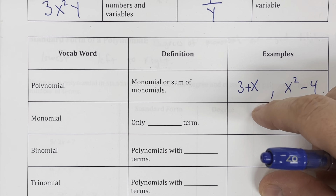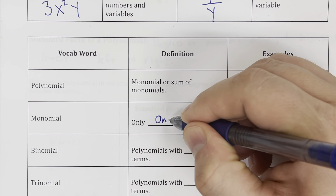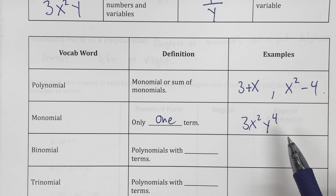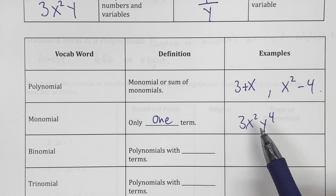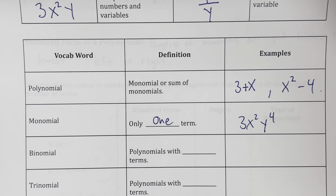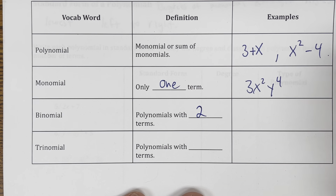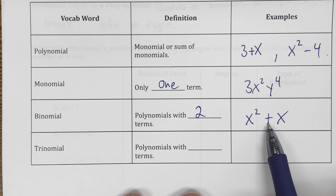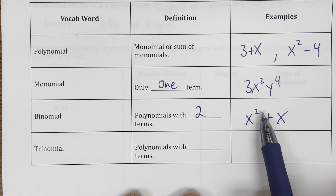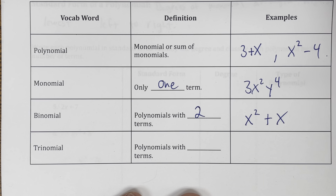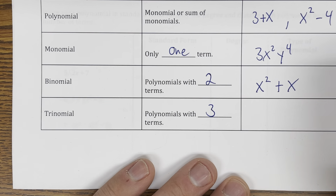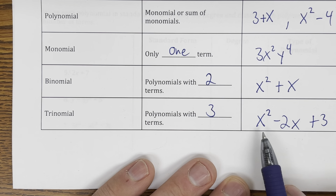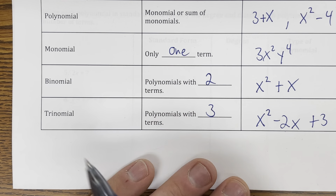A monomial has only one term — something like 3x squared y to the fourth — it's not separated by a plus or minus sign. A binomial is a polynomial with two terms, so something like x squared plus x, separated by a plus or minus sign. And a trinomial is a polynomial with three terms, so something like x squared minus 2x plus 3 — first term, second term, third term.